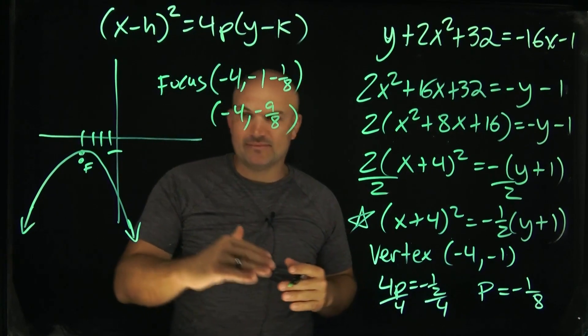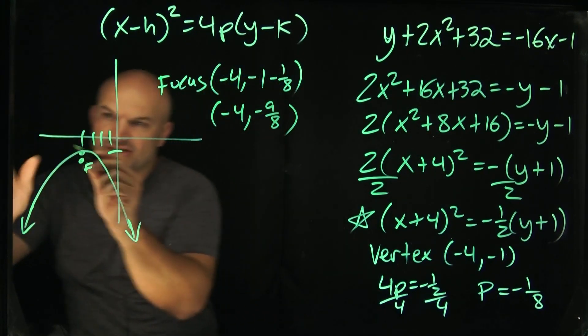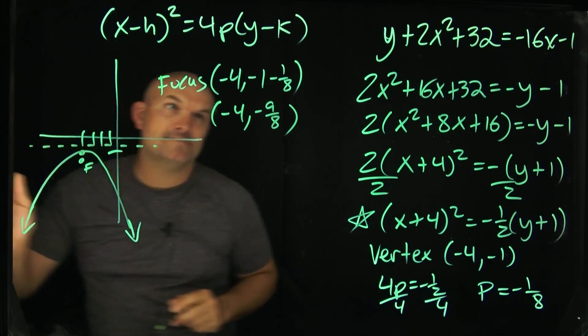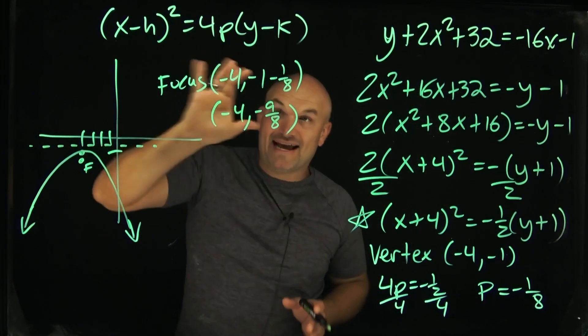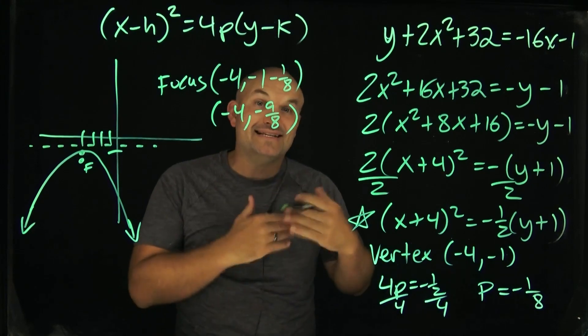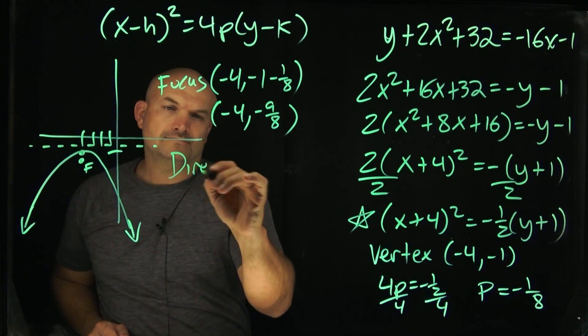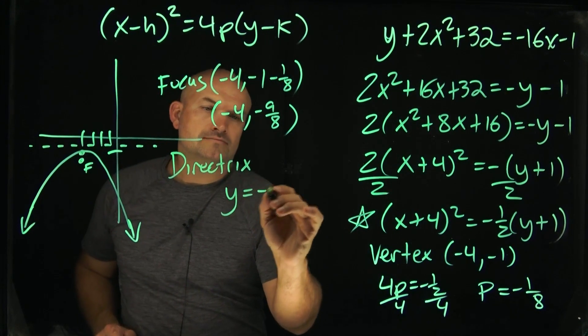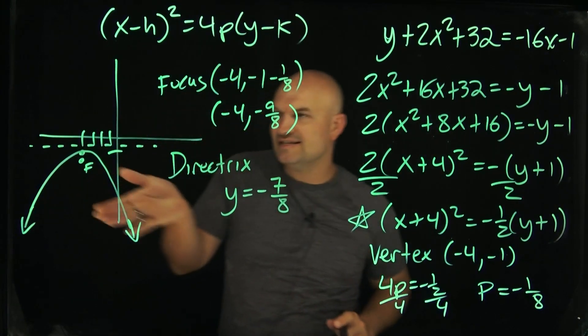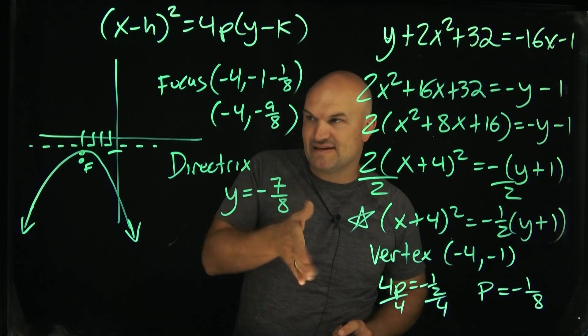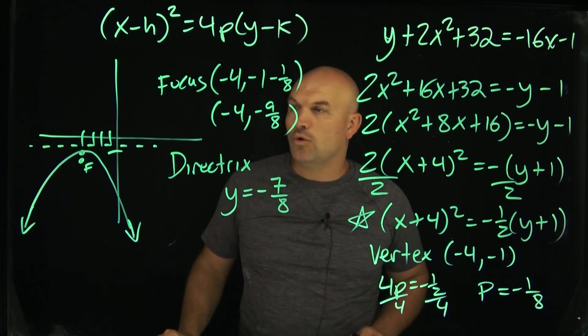And then for the directrix, all we're simply going to do is going to be adding our P, which is going to be taking it over in this case. Now again, since it's a negative one or negative eight over eight, if you add a one eighth, that'd be like a negative seven eighths. And you can see in this case, I'm going to write y is equal to negative seven eighths because that is going to be my horizontal line.